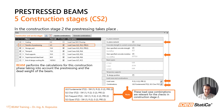You can see that four load combinations were automatically created — one for ULS and three for SLS checks. These load combinations are predefined, but you can change them if you want.